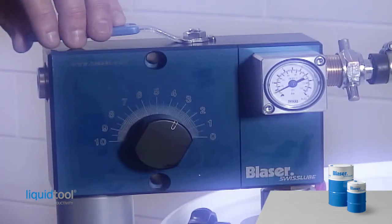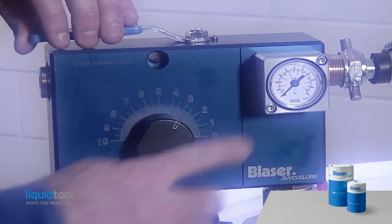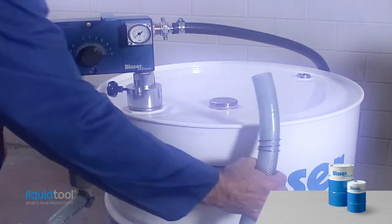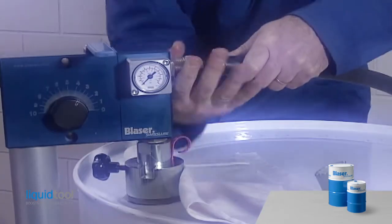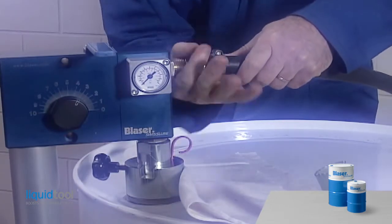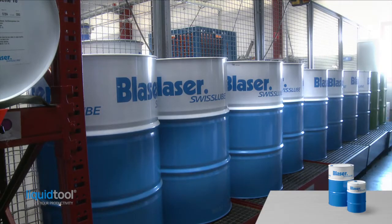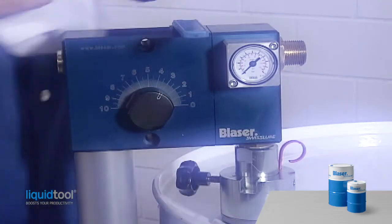Briefly open the jet mix tap to relieve the pressure, then close it again immediately. Make sure that no water gets into the drum. Water in the concentrate makes it unusable by causing reverse emulsion.